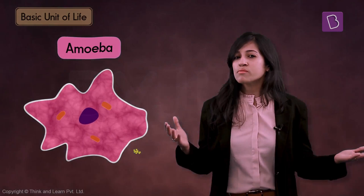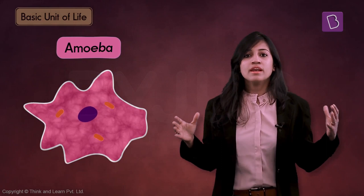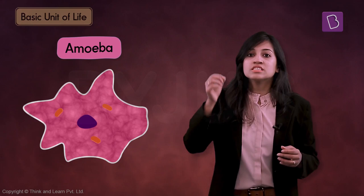None of the individual components of the amoeba — like the membrane which covers the amoeba, or even the proteins present inside the cell — can actually function on their own. They all need to come together into a cell as a whole, and this cell as a whole can be considered as a functional unit of life.